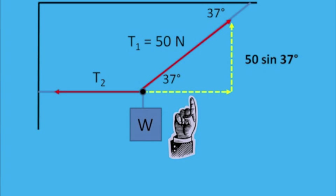The horizontal component is adjacent to the 37 degrees, and it becomes T1, or 50 cos 37.